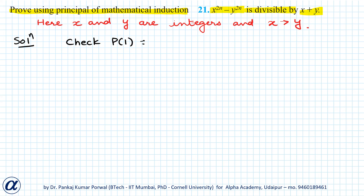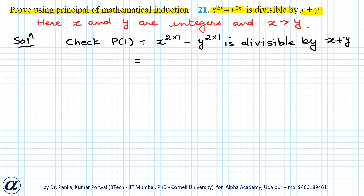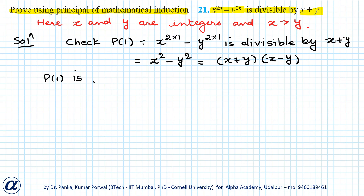I can obtain the statement for P(1) by substituting n equals 1 in the given expression, so I get x to the power 2 minus y to the power 2 is divisible by x plus y. This simplifies as x squared minus y squared, which equals x plus y into x minus y, and that is divisible by x plus y.